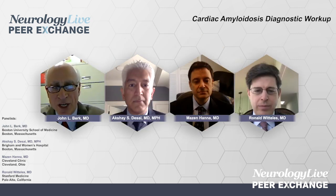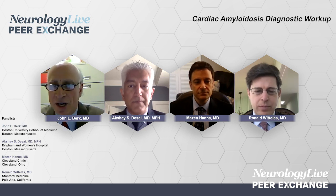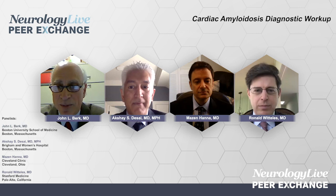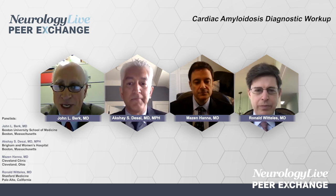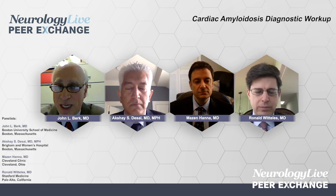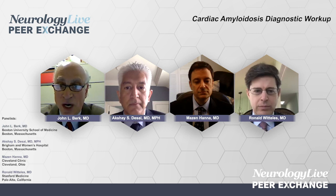Today we're going to discuss a number of topics pertaining to the diagnosis and treatment of cardiac amyloidosis. Amyloid is a family of diseases resulting from the misassembly and misfolding of particular proteins. There are over 30 proteins that can misfold to form amyloid. Identifying the subunit protein is critical to management — it determines what organs are involved and ultimately defines what therapies are considerations.